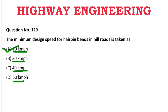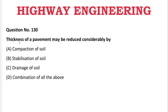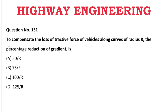Next question: Thickness of the pavement may be reduced considerably by — A: compaction of soil, B: stabilization of soil, C: drainage of soil, D: combination of all the above. The correct answer is D, combination of all the above.